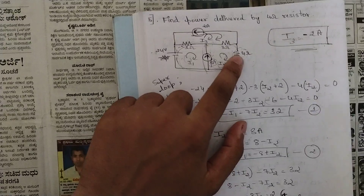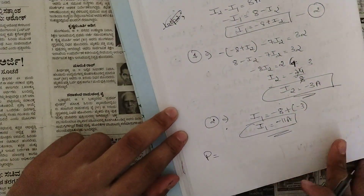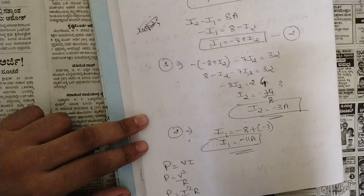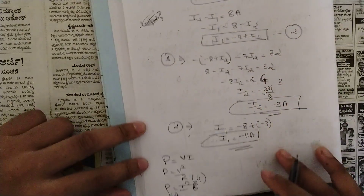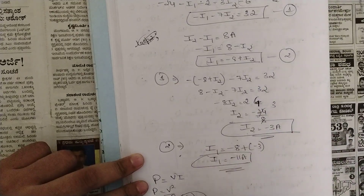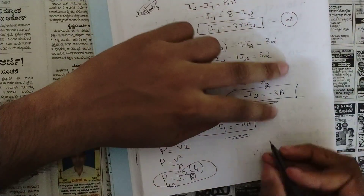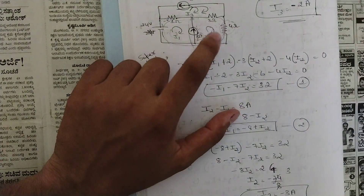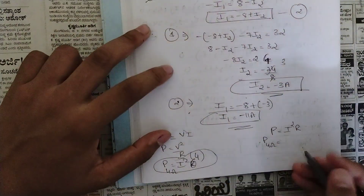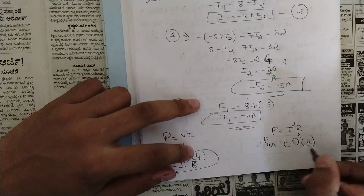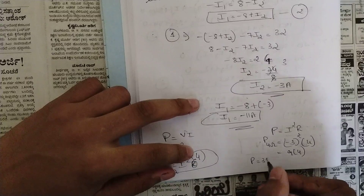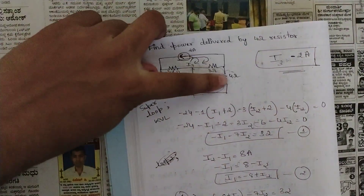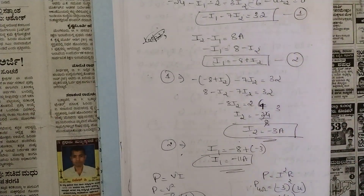Our goal is to find power delivered by the 4 ohm resistor. Using P = i²R: the 4 ohm resistor lies in loop i2, so current through it is i2 = minus 3 ampere. Power = (minus 3)² × 4 = 9 × 4 = 36 watts. The power delivered by the 4 ohm resistor is 36 watts.